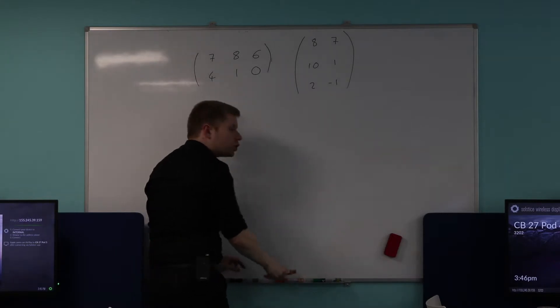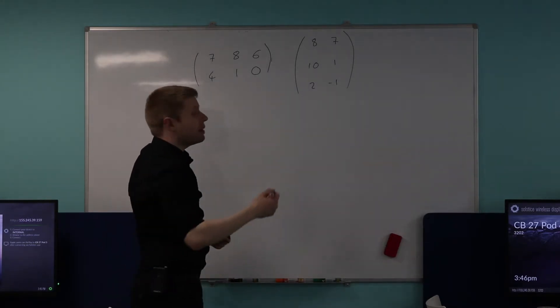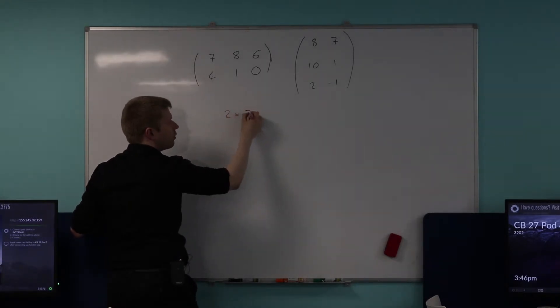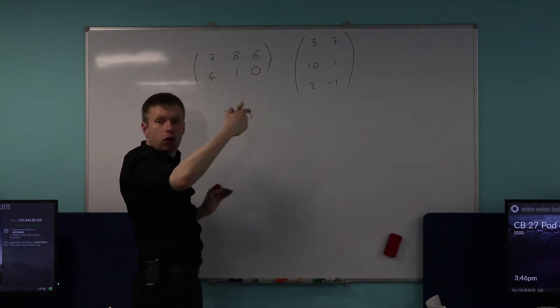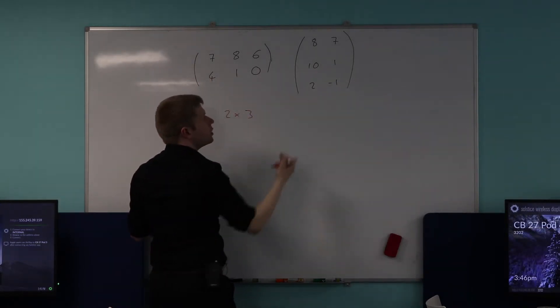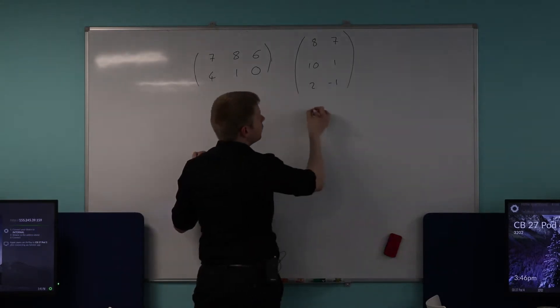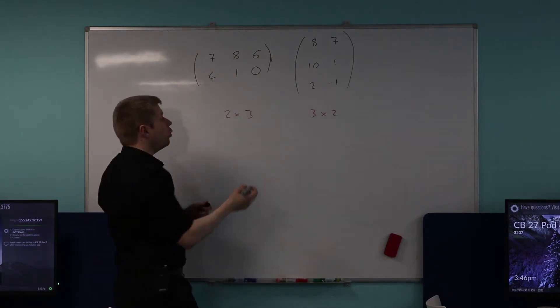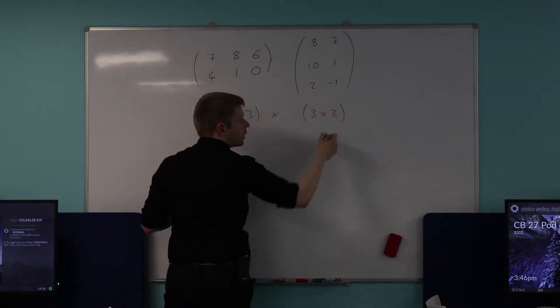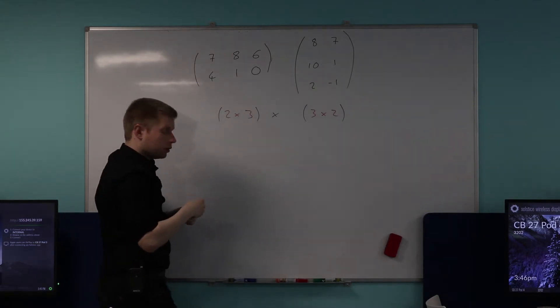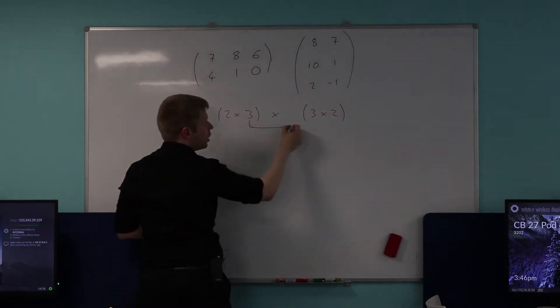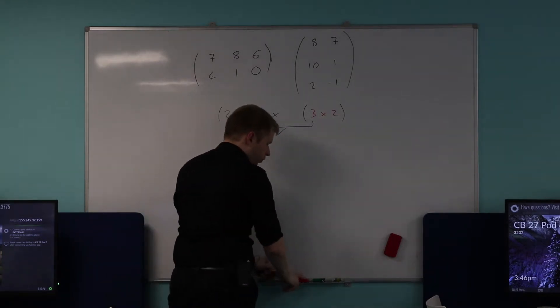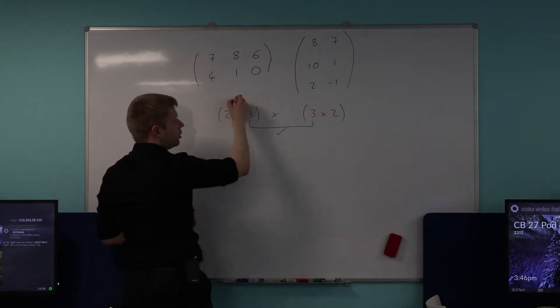So let's first of all check the dimensions of this matrix or these matrices. What are the dimensions of the first matrix? Are you happy? Two by three because there's two rows and there's three columns. Is that okay? Somebody else then, what's the dimensions of this matrix? Excellent, because there's three rows and two columns. So let's check this. Can we first of all multiply these matrices together? Can we multiply them? Why? Excellent. The inner two dimensions match, which means that we can multiply them together.